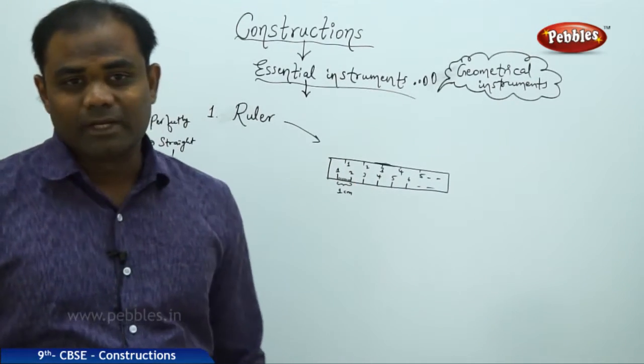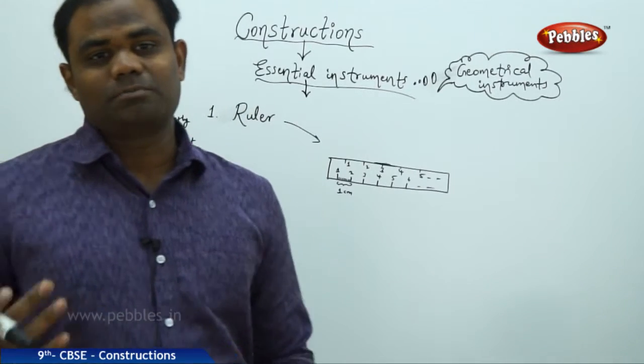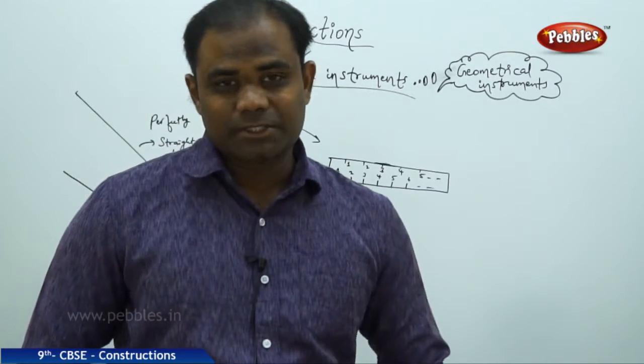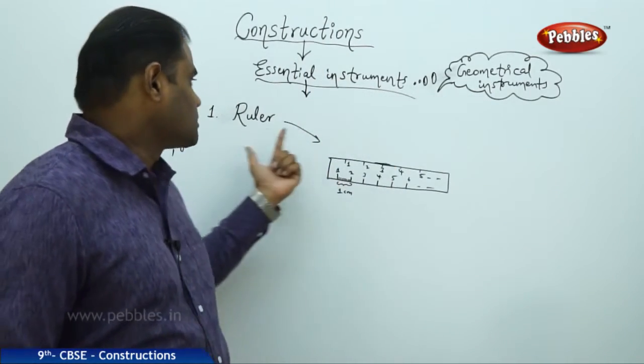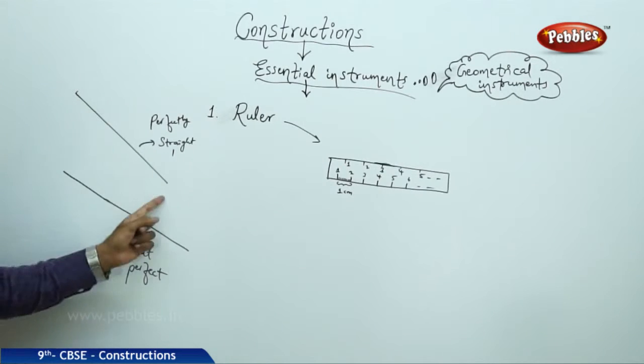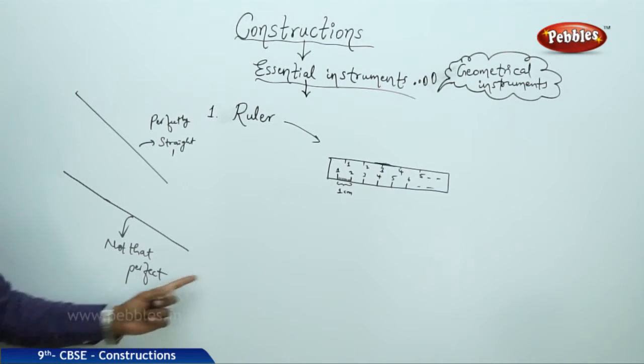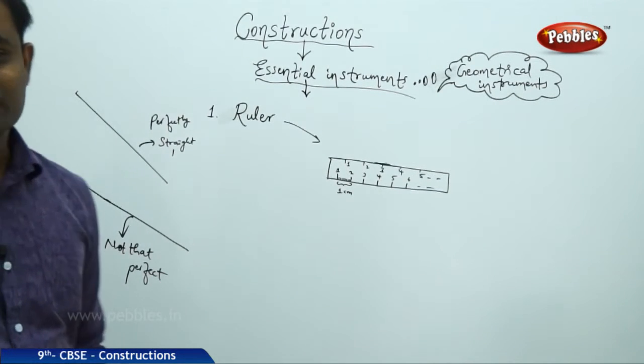That's how we understand a ruler basically with its properties. The first essential instrument in the geometrical list of instruments is a ruler because it gives a perfect straight line and a hand drawn does not give me a perfect straight line.